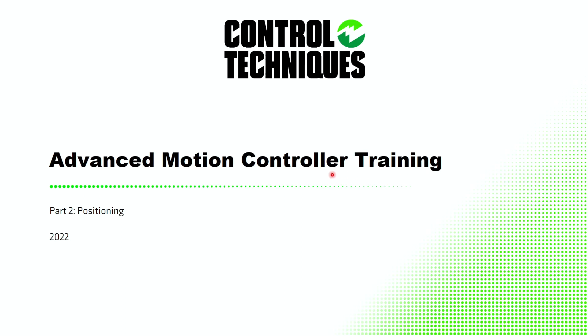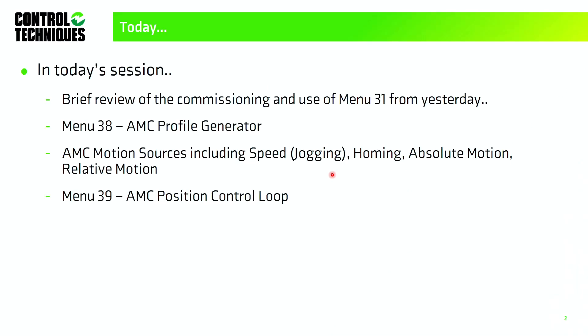Today we're going to go through the positioning part — this is where the rubber hits the road. I'm going to cover a brief review of what we did yesterday, specifically the spreadsheet we'll be using today. I'll also go through the AMC profile generator in menu 38, then motion sources including speed, homing, absolute and relative motion, and we'll end with some tuning — looking at the AMC position control loop.